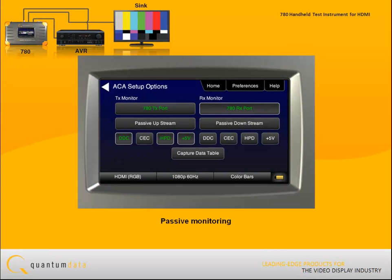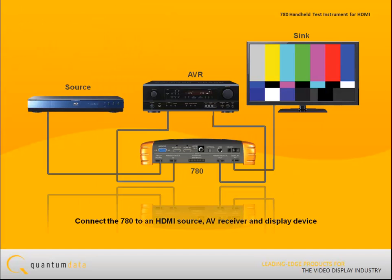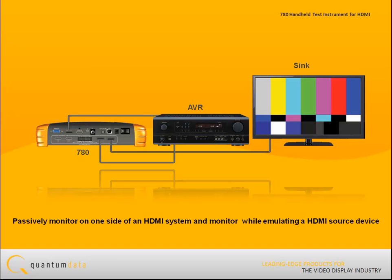The passive monitoring option enables you to view the upstream and downstream connection sequence events and transactions of an existing HDMI installation comprised of multiple devices. For example, you can connect the 780 to an HDMI source, AV receiver, and display device and monitor the events and transactions between these devices passively. The passive monitoring option also enables you to passively monitor on one side of an HDMI system while emulating a device on the other side.